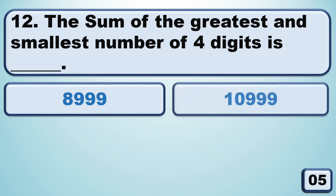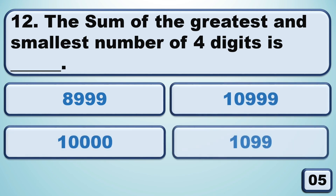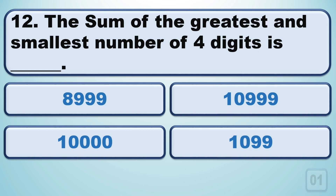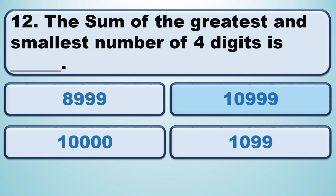The sum of the greatest and smallest number of four digits is 10,999.